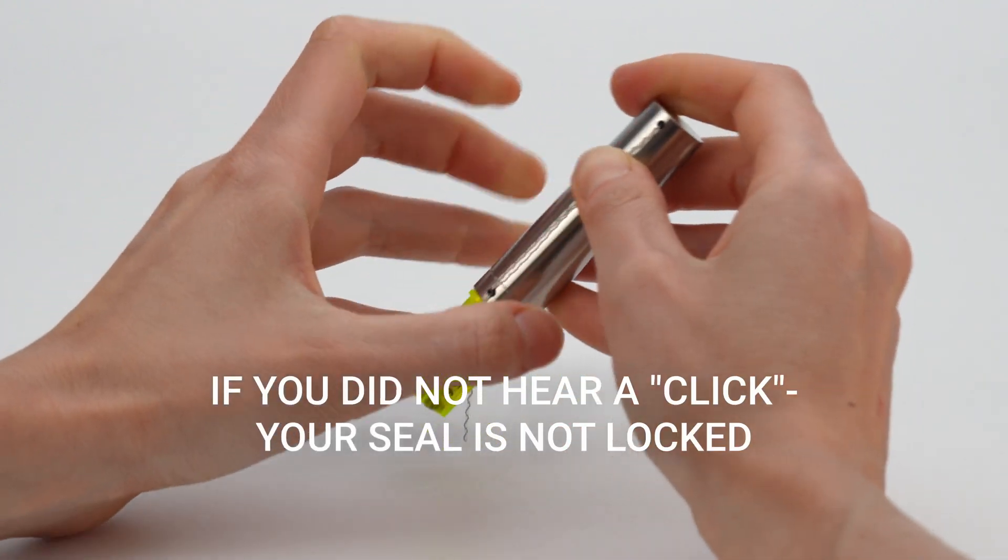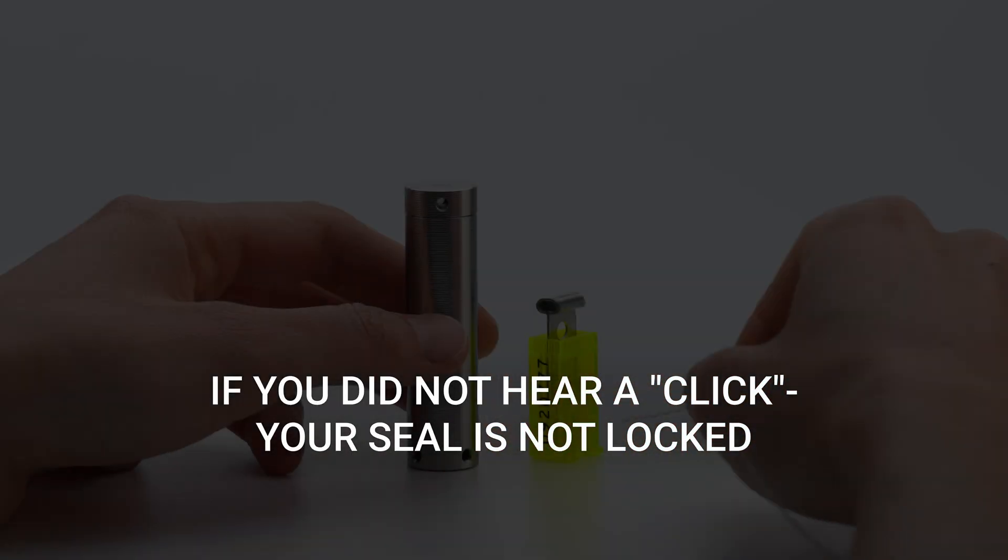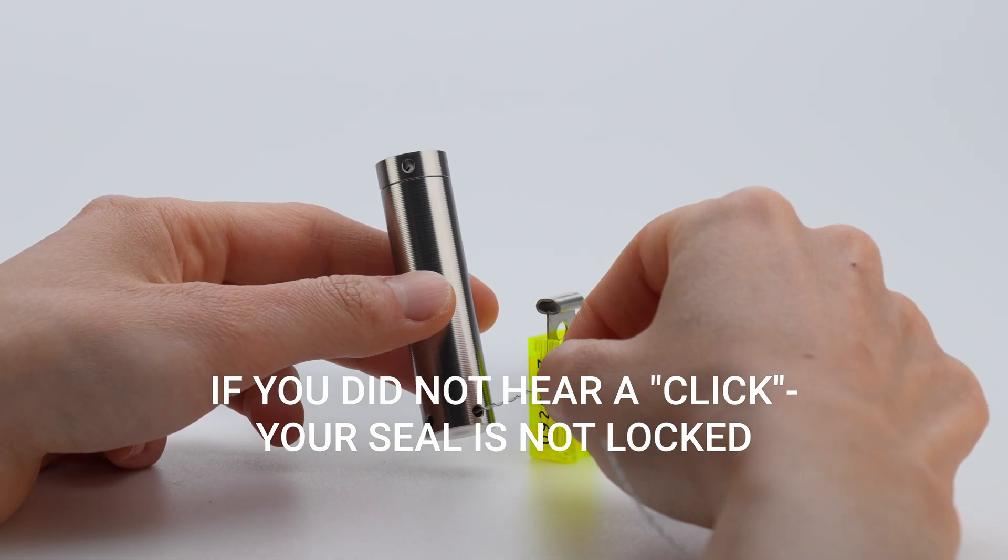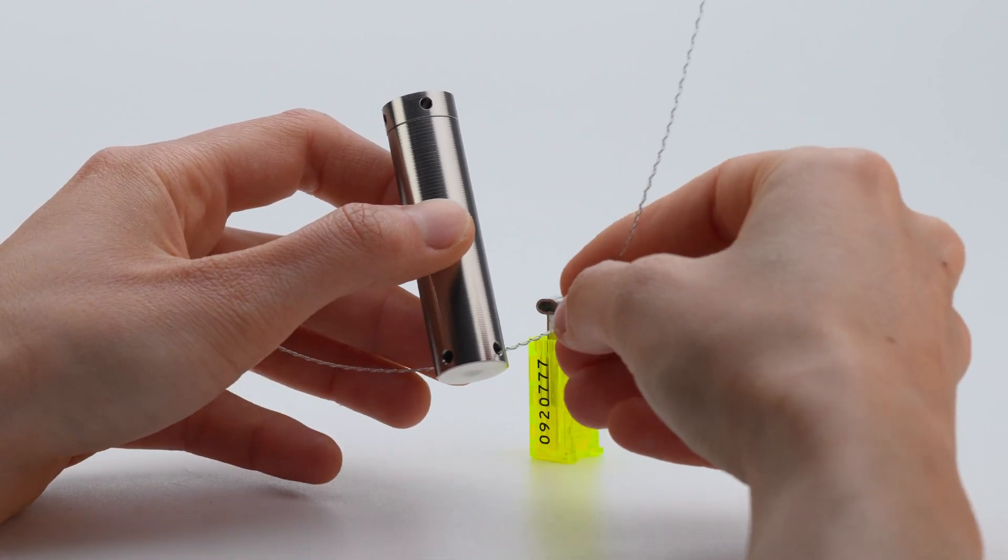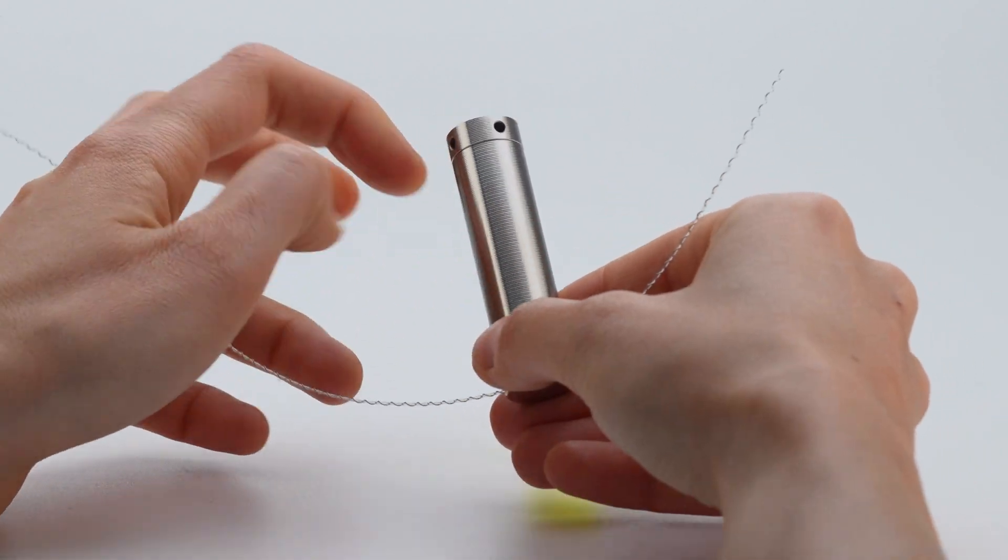This ensures the unit is securely sealed. If you did not hear a click, your seal is not locked. There are many ways to apply the seal. This video presents three options.